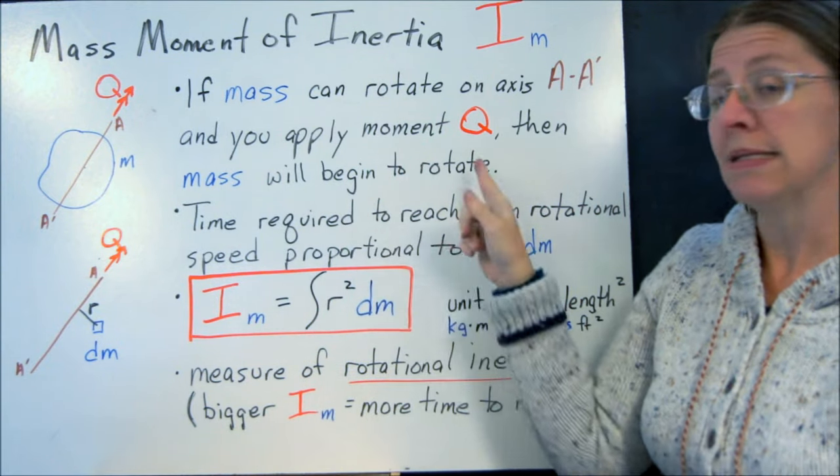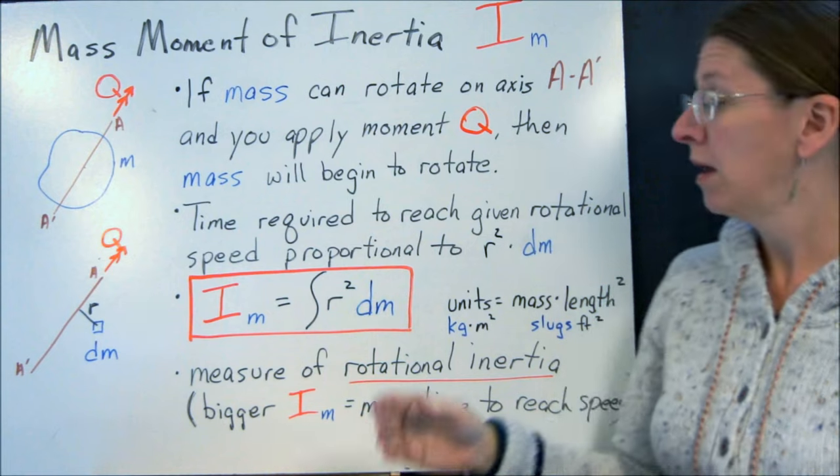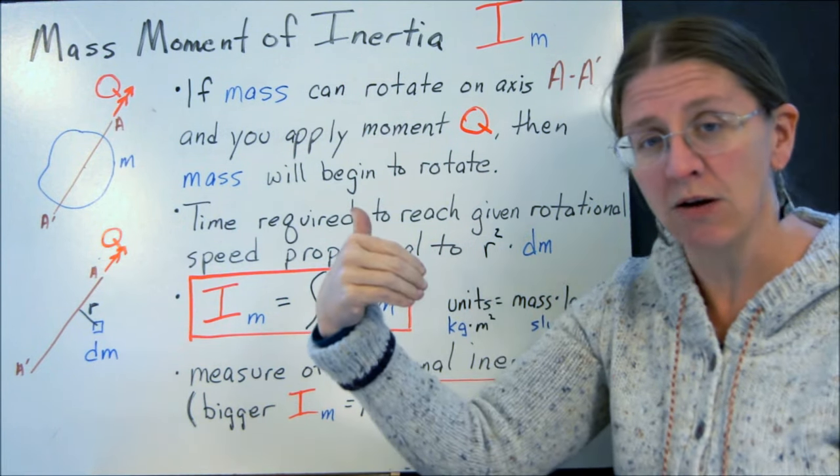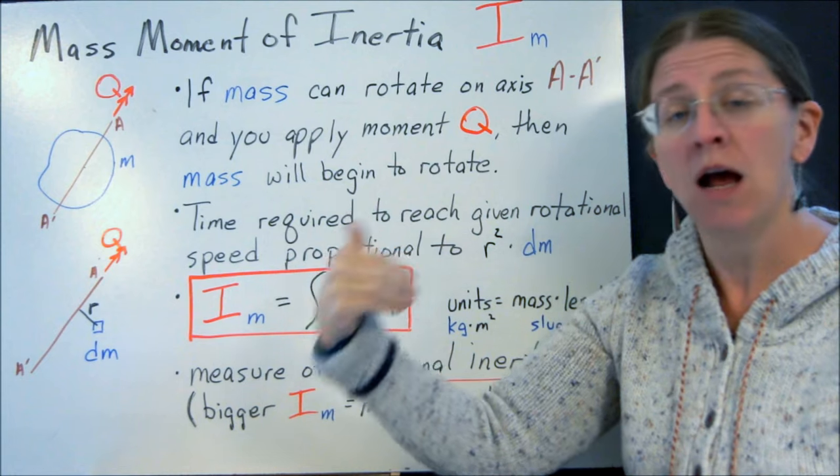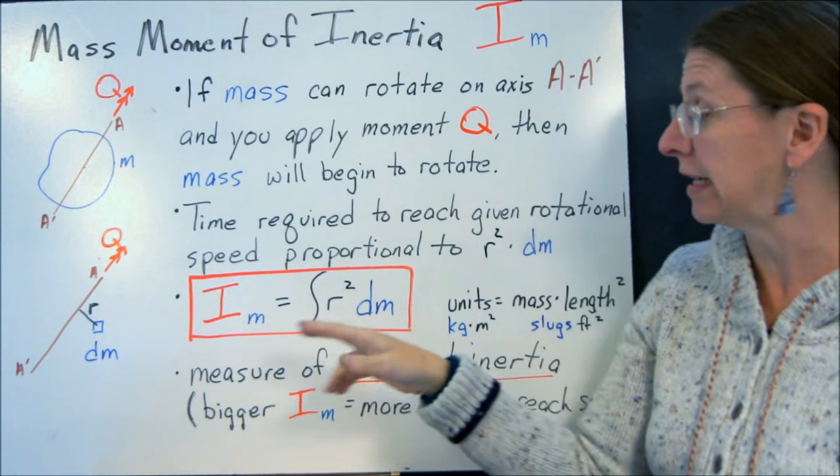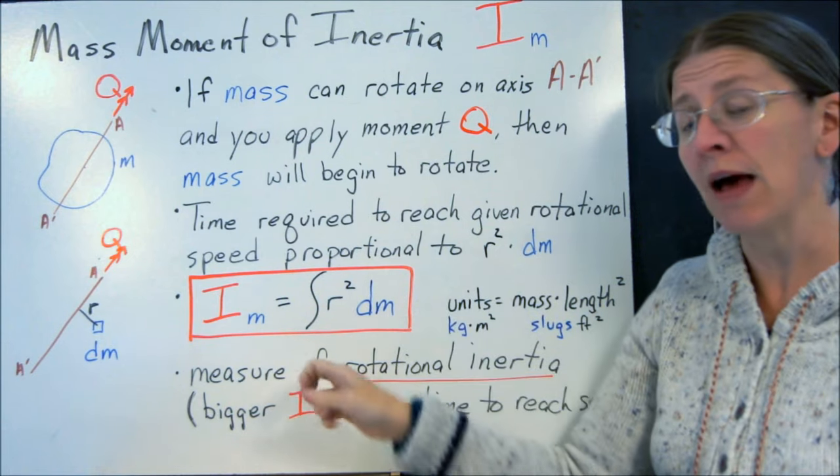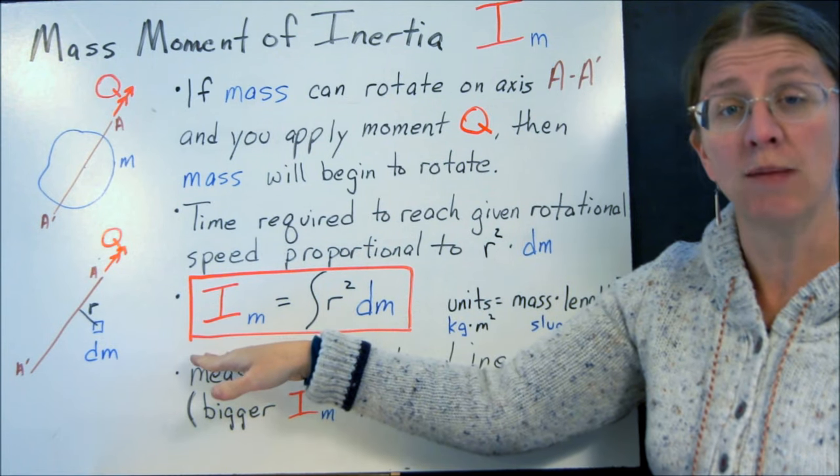And as it begins to rotate, what we know is it takes a certain amount of time to get up to speed. So the time required to get this potato that's spinning around that axis up to a certain angular velocity is proportional to r squared times dm. And if we integrate that, we get the mass moment of inertia for an object.